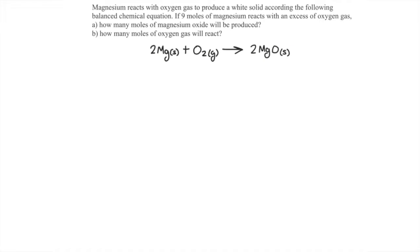Magnesium reacts with oxygen gas to produce a solid white powder called magnesium oxide, according to the following balanced chemical equation. If 9 moles of magnesium reacts with an excess of oxygen gas, how many moles of magnesium oxide will be produced? And how many moles of oxygen gas will react?